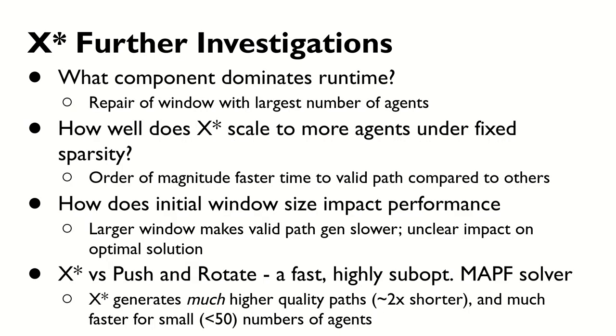Our paper also investigates additional questions. What component dominates X*'s runtime? Perhaps unsurprisingly, dimensionality of the window repair is the largest factor, and so the repair search in the window with the highest number of agents is the most expensive component. Two, how well does X* scale to more agents under fixed sparsity? We generated multiple domains with a fixed ratio of grid area versus agent count and compared how various planners scaled. X* scaled well to larger numbers, with median time-to-valid path an order of magnitude faster than other planners and generating valid paths more often when faced with very large numbers of agents.